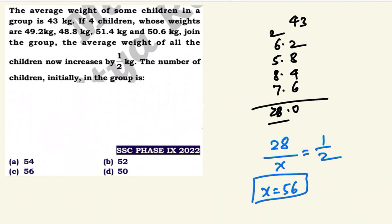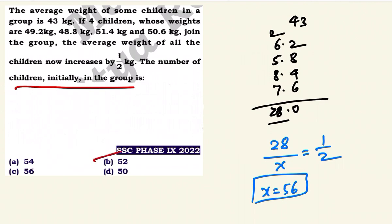So the 4 children's average is 50 kg, which is 56 above 43... actually the new average is 43.5 kg. The 4 joining children have average 50 kg. Total deviation: 4 into 7 is 28 — because 50 minus 43 is 7. But average increases by only 0.5, so 20x is equal to 56 minus 4 equals 52... and 56 minus 4 equals 92. So 20x equals 28, giving us the number of children initially.